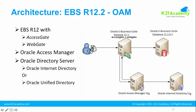The SSO flow works as follows: the user hits Oracle HTTP Server, WebGate intercepts the request and forwards it to Oracle Access Manager. OAM has its own database where policies are defined around which EBS URLs to protect and with what authentication scheme. The user is redirected to the OAM login page defined by that policy. The user submits their username and password to OAM, which then submits those credentials to OID or OUD for validation. Once OID or OUD confirms successful authentication, a session is created in Oracle Access Manager.